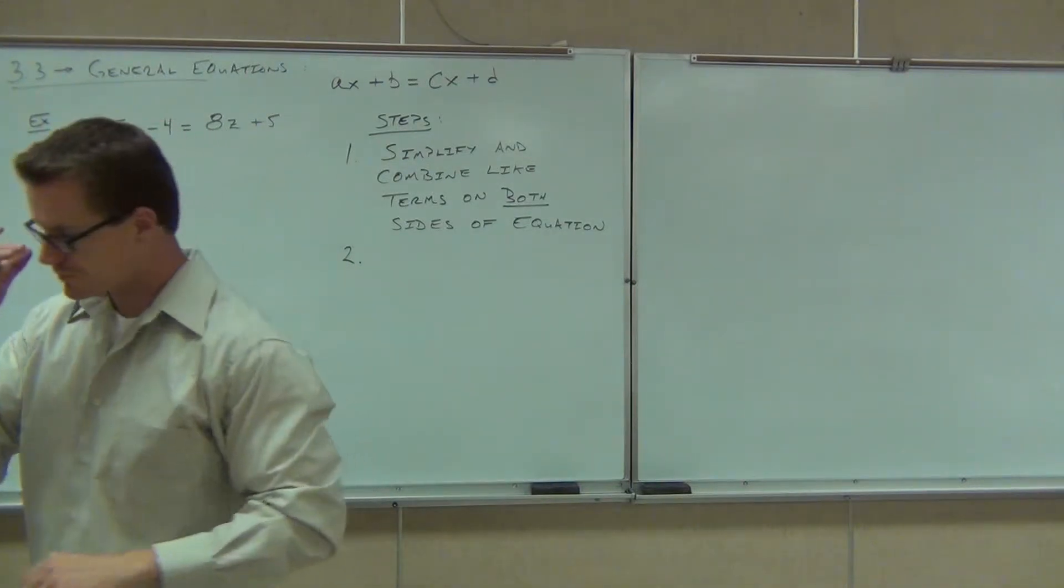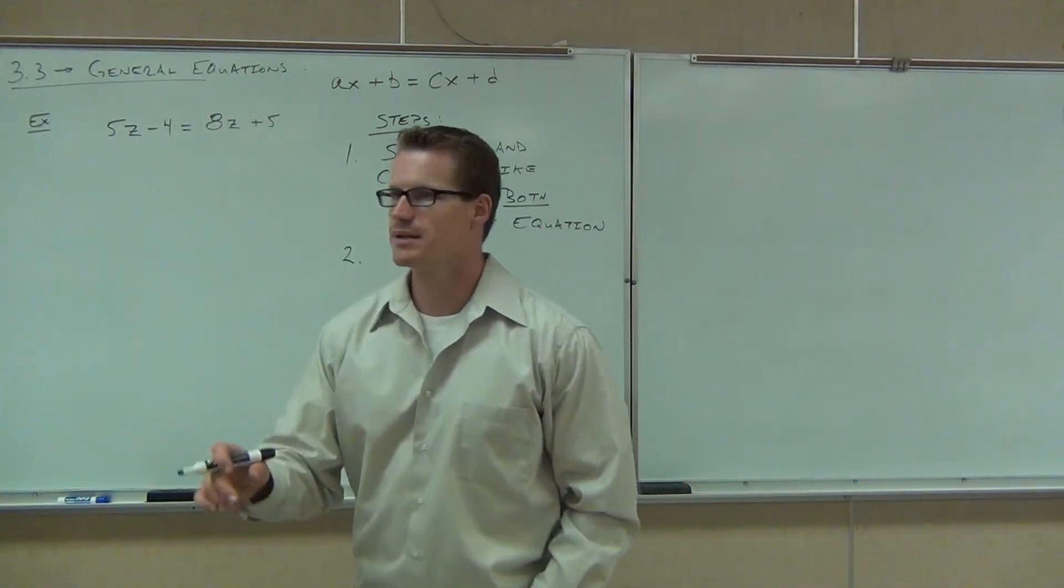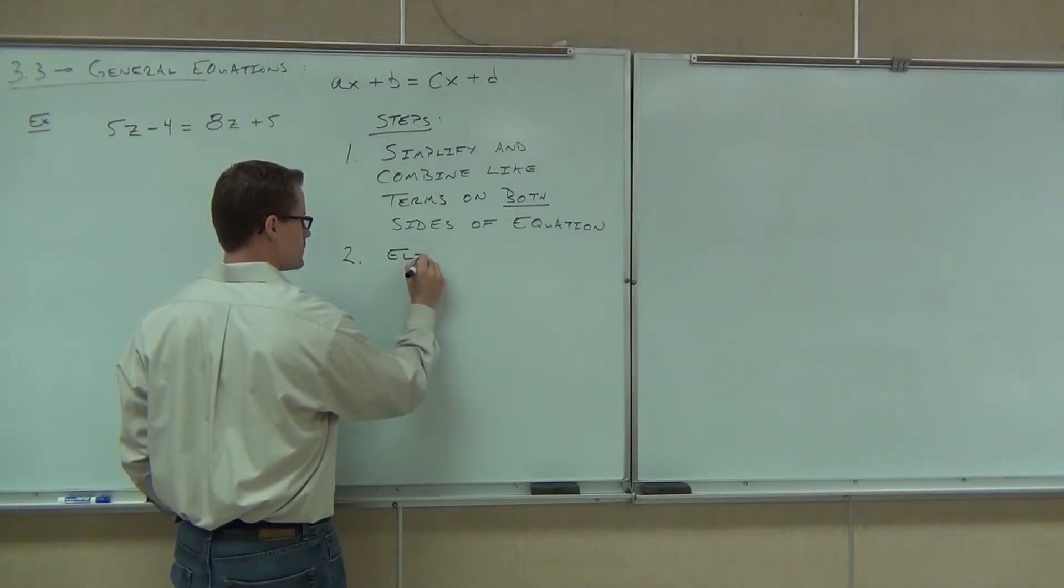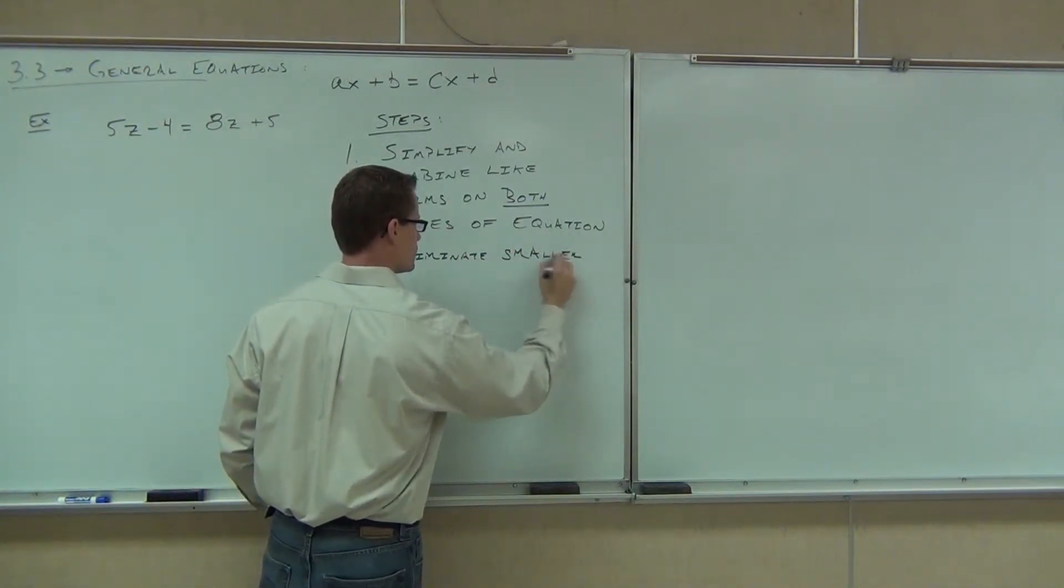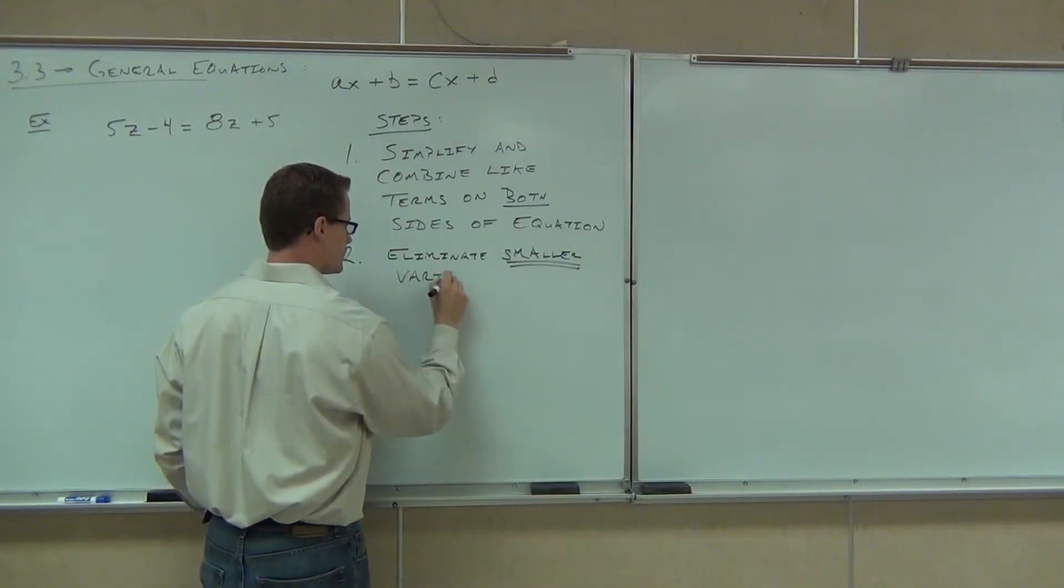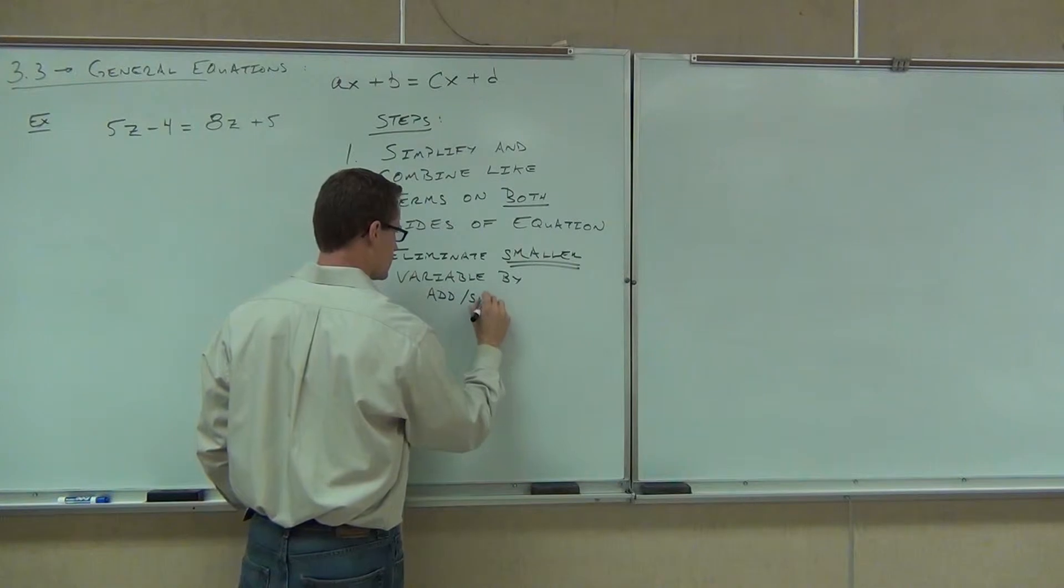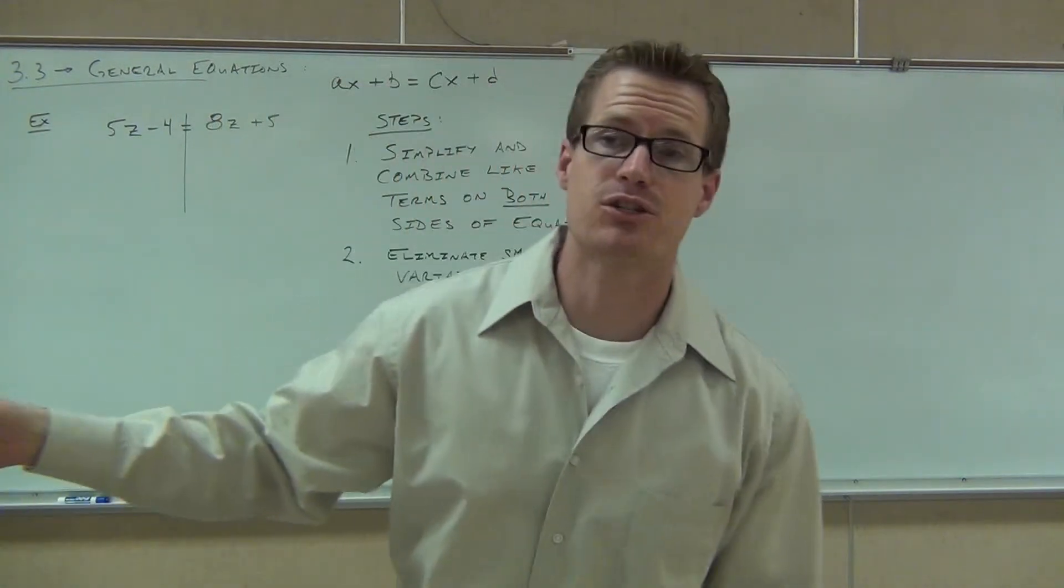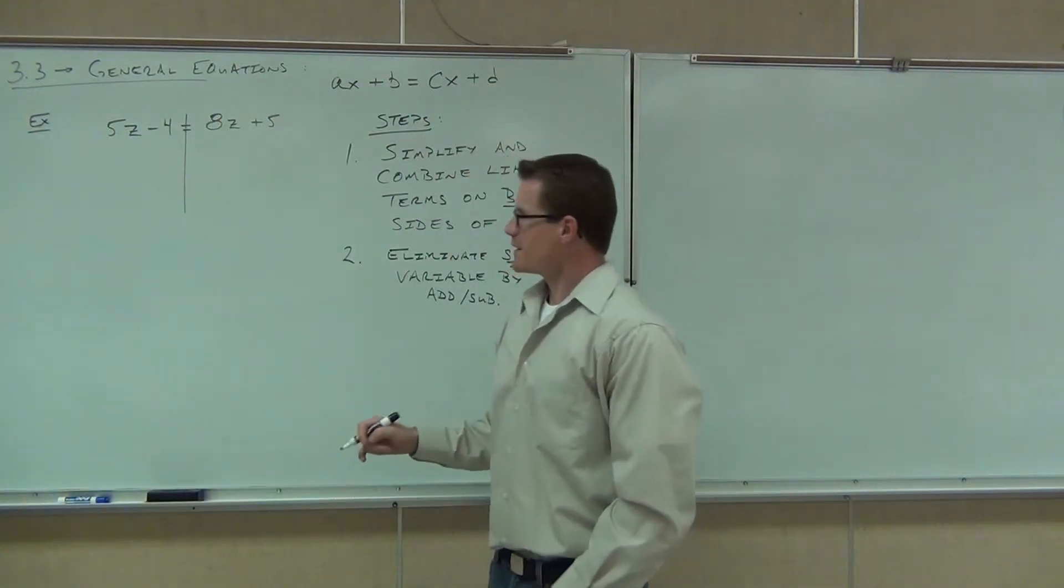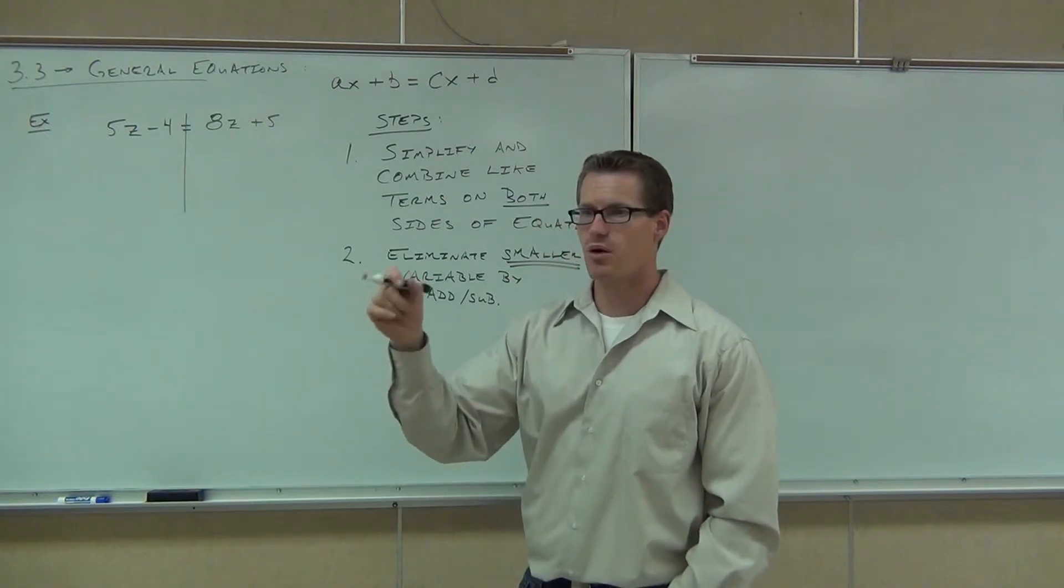Step two: What you're going to do is eliminate the smaller variable, and it will always be by addition and subtraction. What is the smaller variable here? 5Z. 5Z is the smaller one. We have 8Z, we have 5Z. So the smaller variable is what we get rid of first.